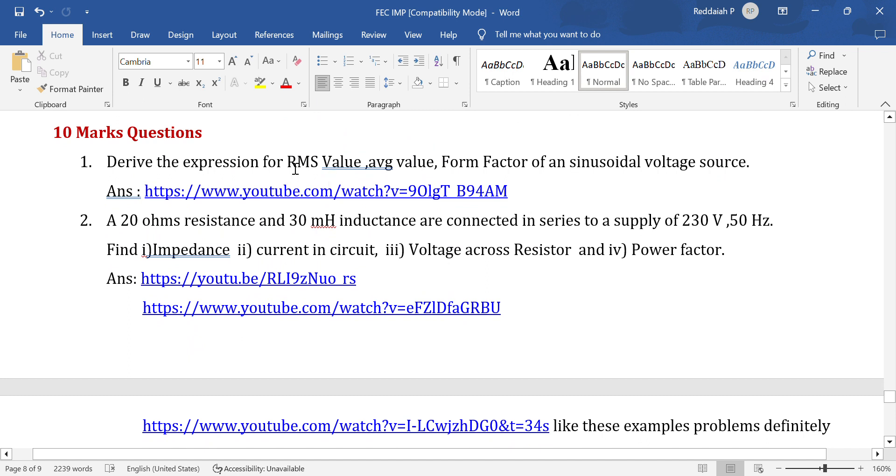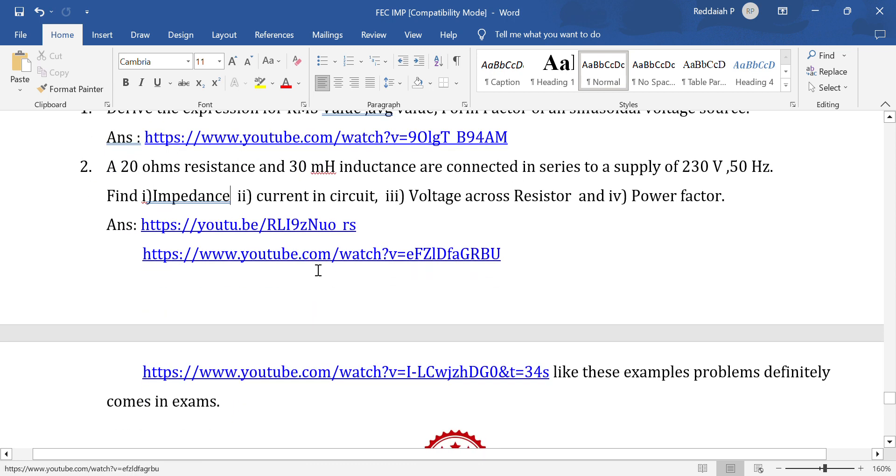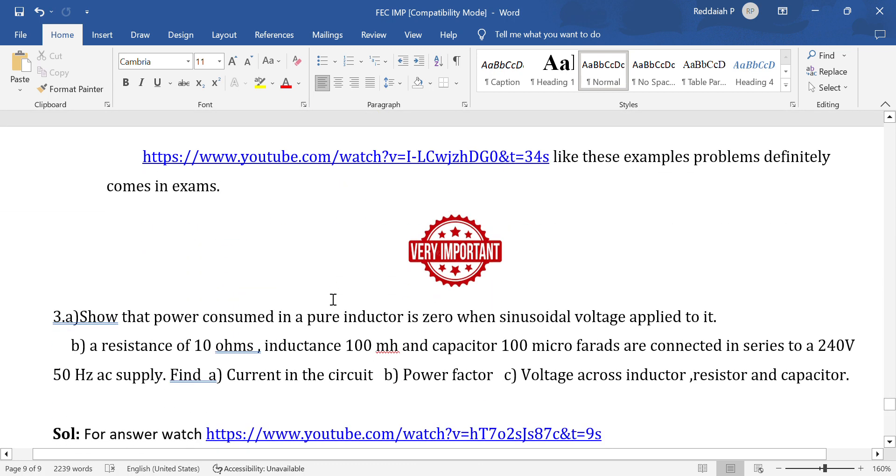Derive the expression for RMS value, average value, form factor. Two marks questions are there. For ten marks, RL circuit, RLC circuit. Impedance calculation is the problem. Very simple. Z equals R plus jXL minus XC. This is the formula. Based on this, impedance. Resistance, inductance, and capacitor connected in a circuit. Impedance Z equals R plus jXL minus XC.